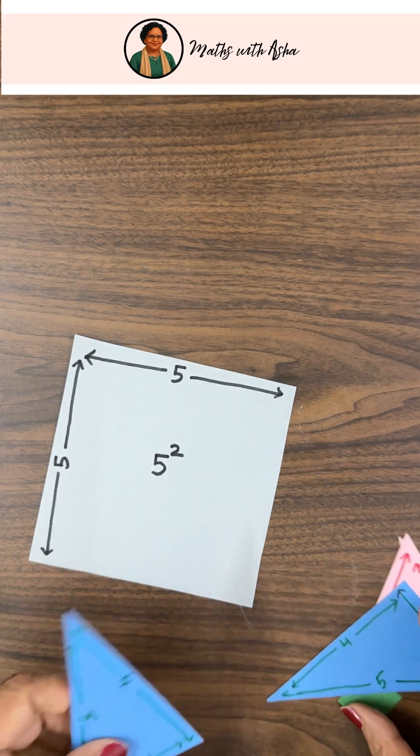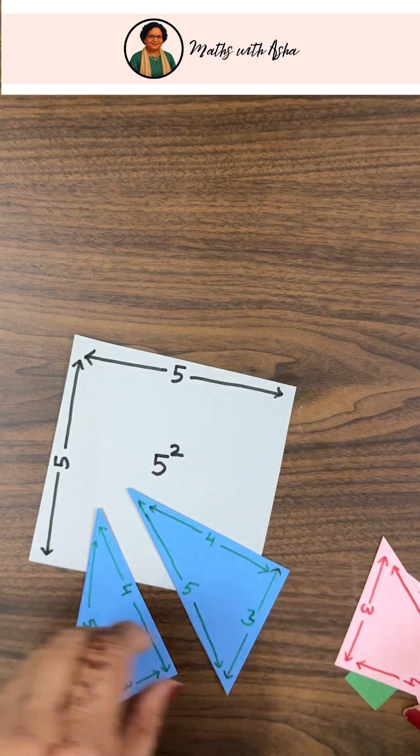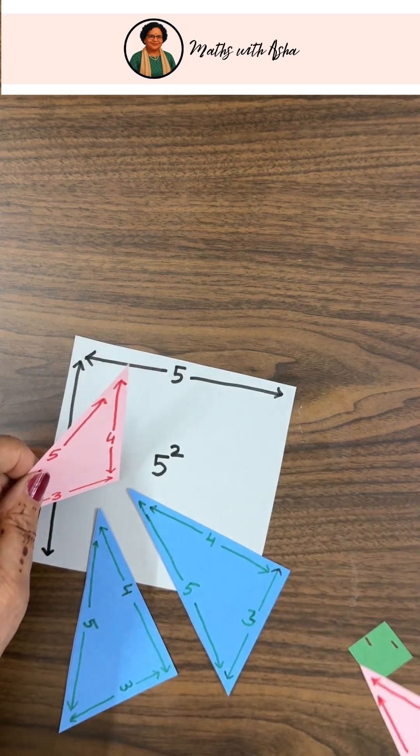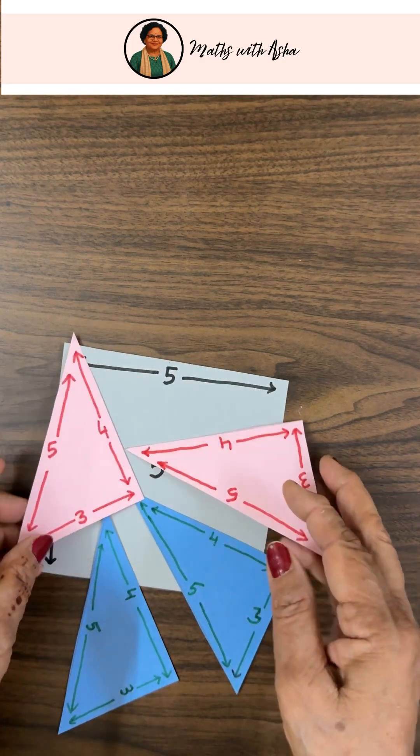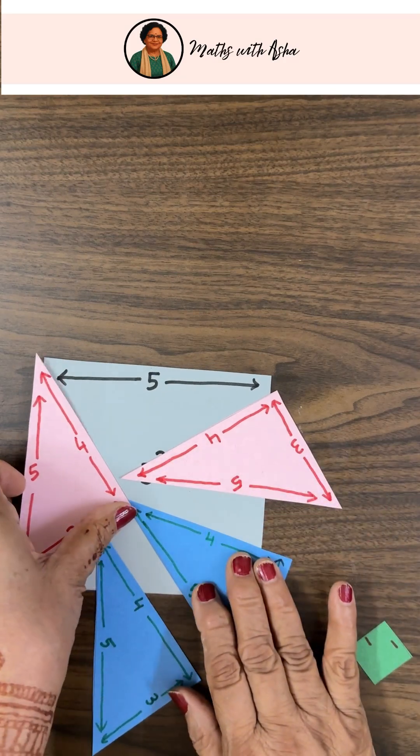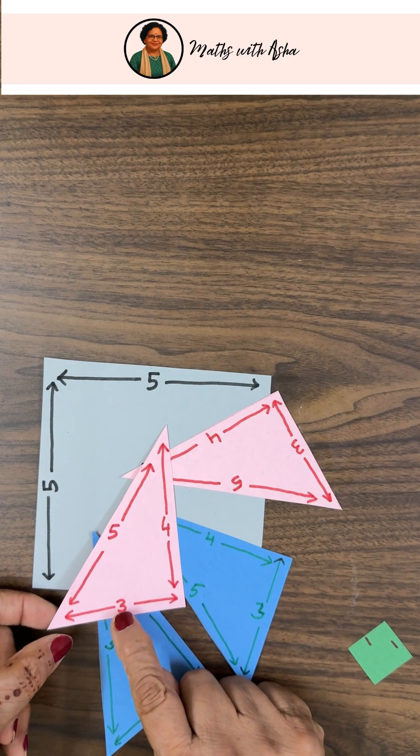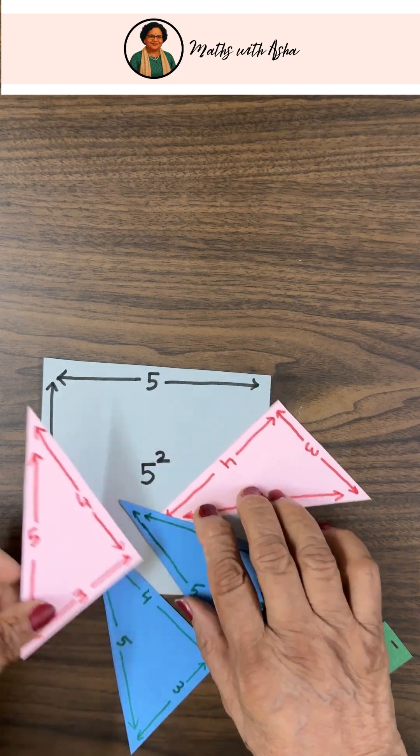What he did was, he took a right-angled triangle with sides ABC and took four copies of that. We have taken the right-angled triangle to be of sides 3, 4, and 5.